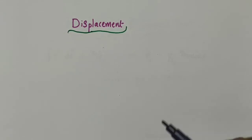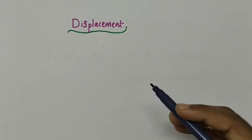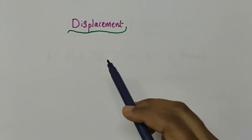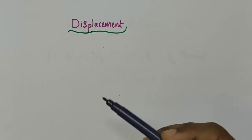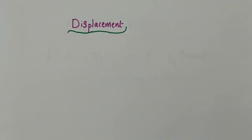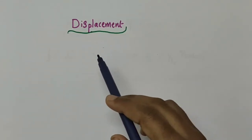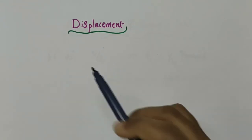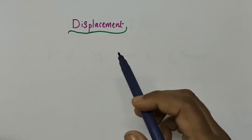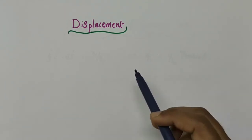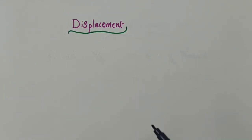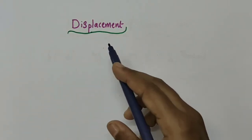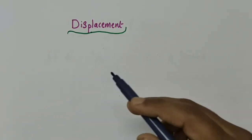Hello everyone. You have learnt the basic concepts of displacement in the 9th standard. In this video, we are going to talk more about displacement. Displacement is the shortest distance, or the straight line distance, between two positions — that is, the initial position of an object and the final position of an object in a given time. Displacement is a vector quantity; it has both magnitude and direction.